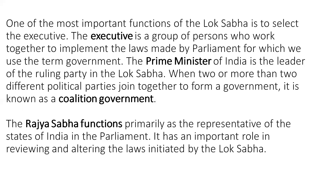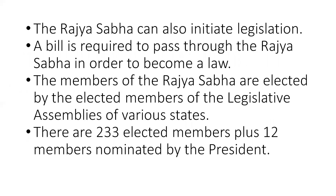The Rajya Sabha, the upper house of the parliament, primarily functions as a representative of the states of India in the parliament. It has an important role in reviewing and altering the laws initiated by the Lok Sabha. Rajya Sabha can also initiate legislation. A bill is required to pass through the Rajya Sabha in order to become a law. The members of the Rajya Sabha are elected by the elected members of the Legislative Assembly — that is why they are indirectly elected. There are 233 elected members plus 12 members nominated by the President.